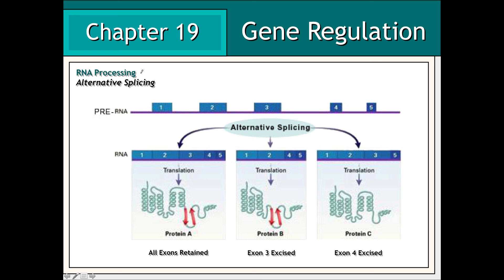In addition to various transcriptional control mechanisms, there are also differences in the manner in which RNA is processed that can influence gene expression and the characteristics that a particular cell type manifests. Consider this primary RNA transcript or pre-RNA molecule. In some cells, this pre-RNA molecule will be processed by spliceosomes in sometimes markedly different manners. In our first example, the pre-mRNA molecule has been processed such that all of the exons have been retained and only the introns have been removed, resulting in a particular polypeptide and protein product having a specific function within the cell.